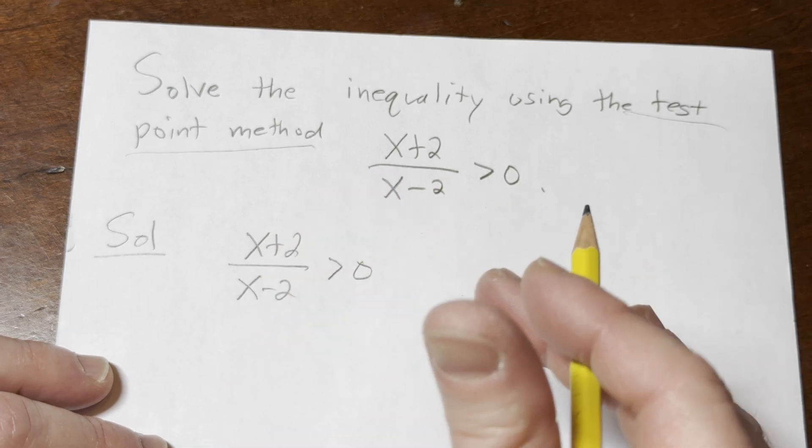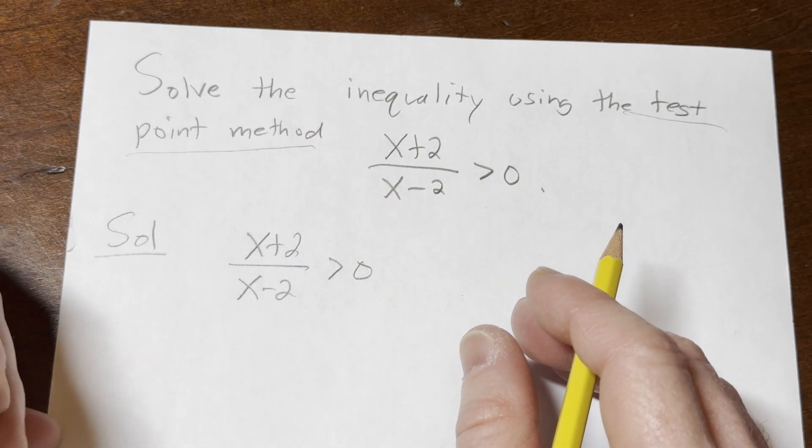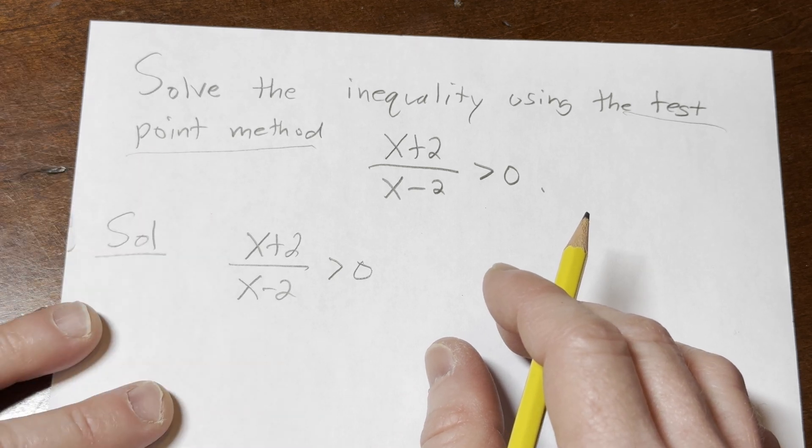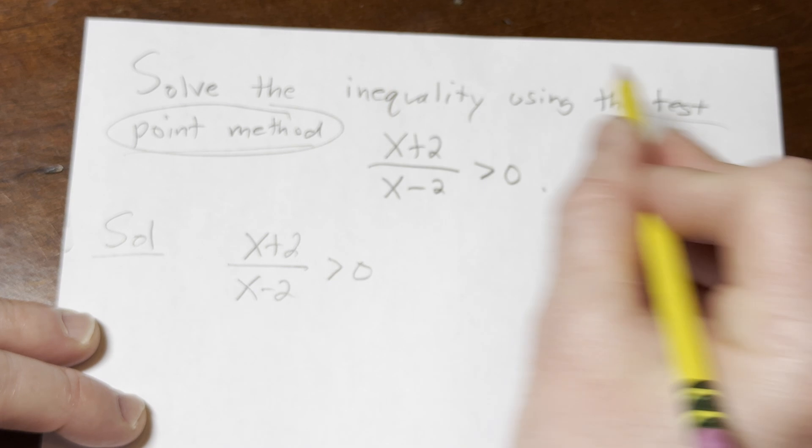The next step in the test point method is to set the numerator and denominator equal to zero. So this is not an algebraic step, I want to emphasize that. This is because we're following a procedure, we're using what's called the test point method.